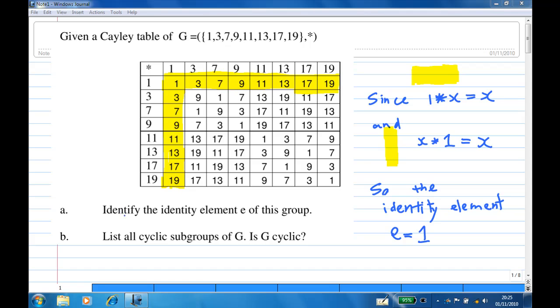First, identify the identity element e of this group. Now look at the row and column highlighted. The horizontal row tells me that 1 star x equals x, and the vertical column highlighted tells me that x star 1 equals x. So, the identity element e equals 1.